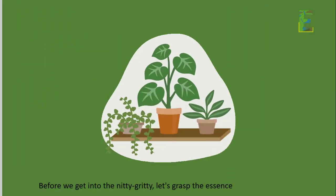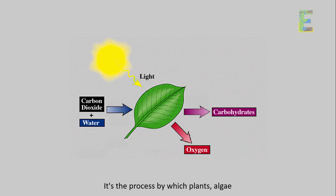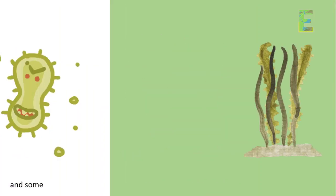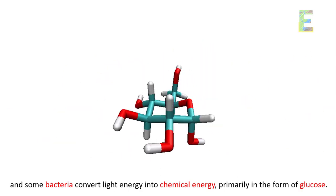Before we get into the nitty-gritty, let's grasp the essence of photosynthesis. It's the process by which plants, algae, and some bacteria convert light energy into chemical energy, primarily in the form of glucose.